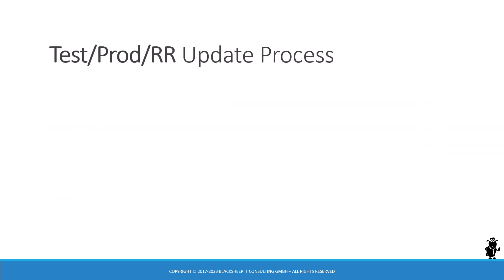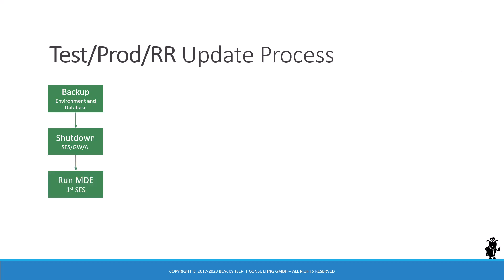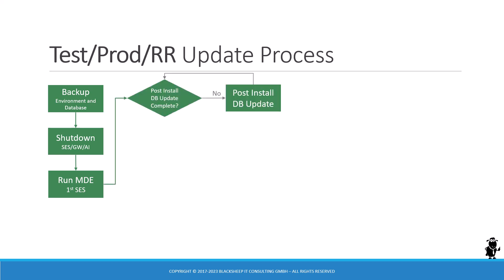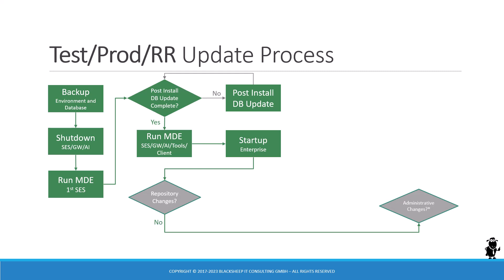Now let's take a look at test, production, or RR environments. You start with a backup, shut down the software, and run the Modular Deployment Engine in update mode on the first Siebel server to get the post-install database update out of the way. Then you update any other instances of Siebel CRM in that environment and start up the environment. If there have been no repository changes and no administrative changes, you are done.